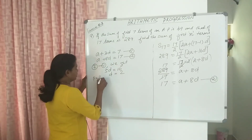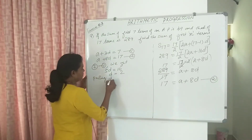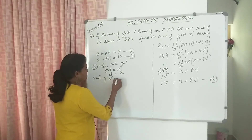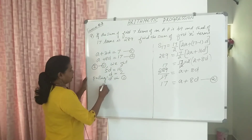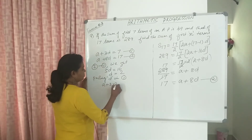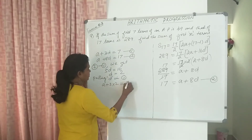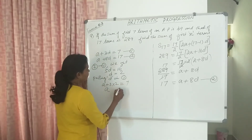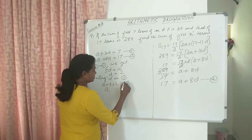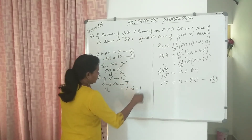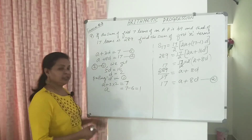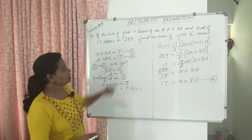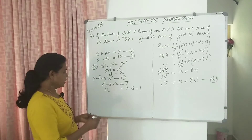Putting D in equation 1: A plus 3 into 2 equal to 7. So A is equal to 7 minus 6, that is 1. So A and D we will get. This is the sum of first N terms.